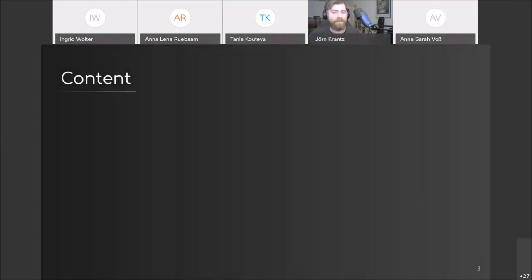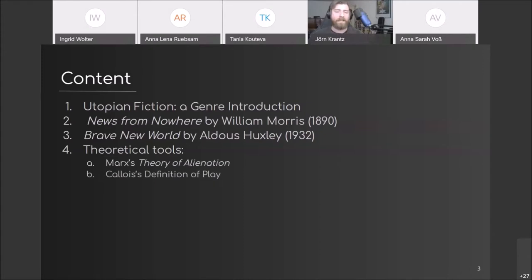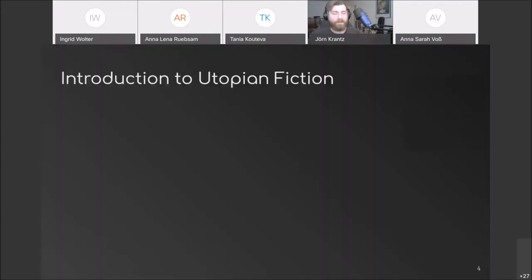First, I will provide a very brief introduction to this subgenre of science fiction and introduce the worlds that Morris and Huxley created in their novels. Afterwards, I will use Marxist theory of alienation, as well as Kahloa's definition of play as my tools of analysis. Lastly, I will apply these to the novels, outlining similarities and, more importantly, differences and how they can be used as predictors of the state of a society.